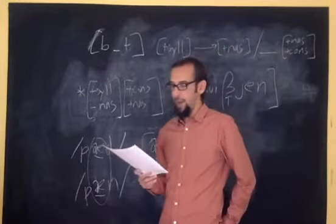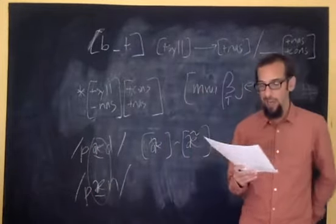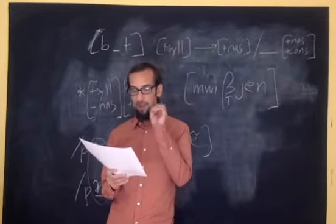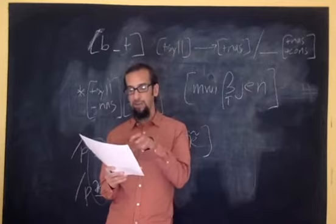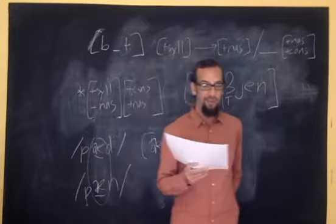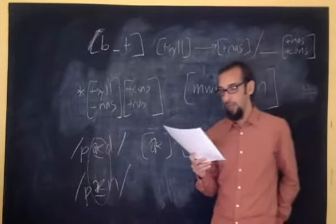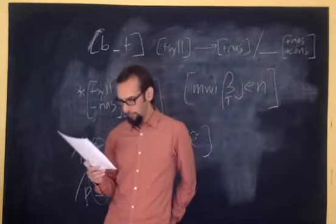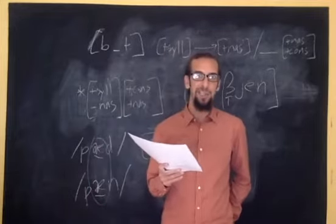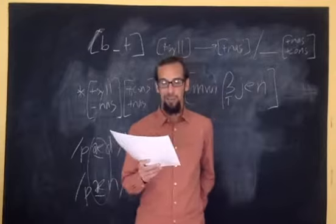This is shown in the data on page 4, where we have voicing contrasts in just about every environment or context you can think about. These environments are stated in slightly schematic terms in the leftmost column, where V stands for a vowel and the pound sign indicates a word boundary. There's actually a mistake in that table. You can find the mistake in the environments I've drawn here. That would be a good exercise.